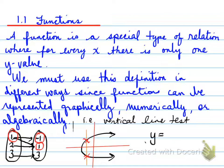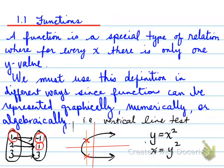Let's say we have an equation y equals x squared. For every x there will be one y, so this represents a function. An equation like x equals y squared is not a function, because for every x we could have two y values. We're going to look at more examples of relations and functions later on in this course.